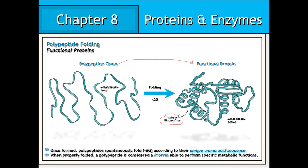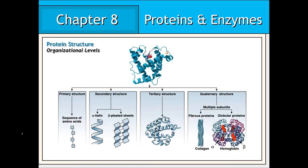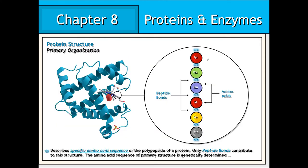In studying proteins, we begin to realize that their structures are composed of levels of ever-increasing complexity, which ultimately dictates the protein's final structure and therefore its function within the cell. The levels of protein structure we will consider here, from simplest to most complex, include primary, secondary, tertiary, and quaternary. The primary structure of a protein represents the specific amino acid sequence of its polypeptide chain.